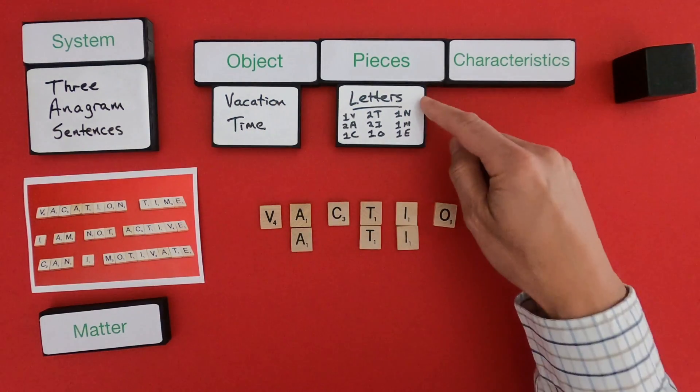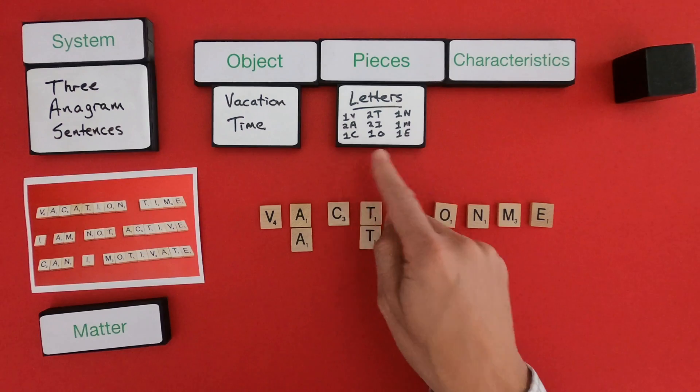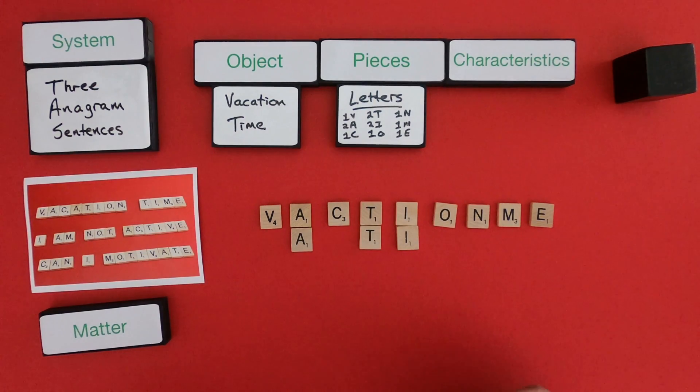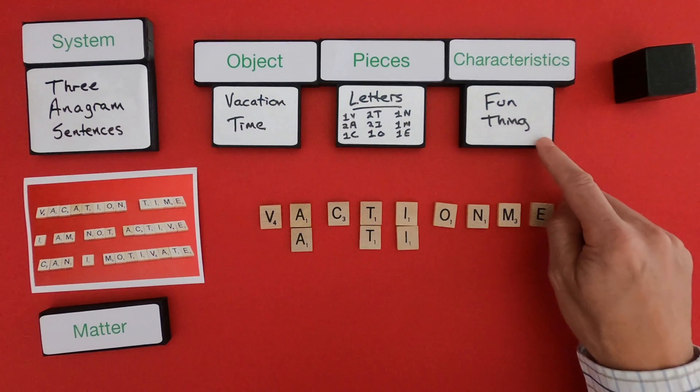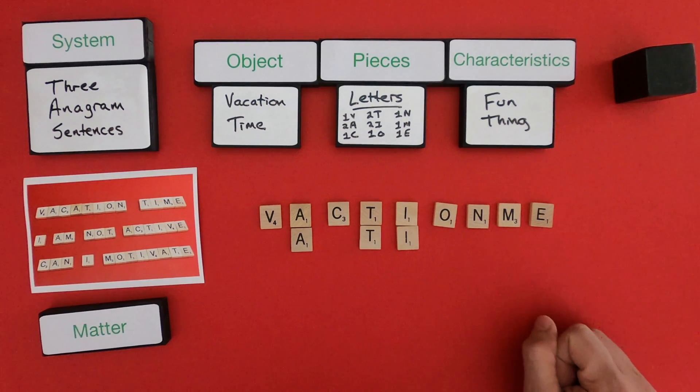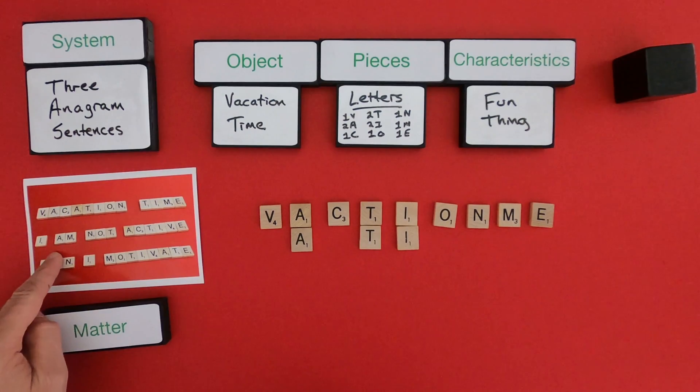Okay so now I've listed all the pieces, which are going to be these letters, and the number of each of those pieces. And then the final thing I'm going to do is talk about the characteristic of this object. So this is a thing, it's a noun, so this would be a fun thing, vacation time. So now I'm going to do the same thing, but I'm going to do it for the other phrases.